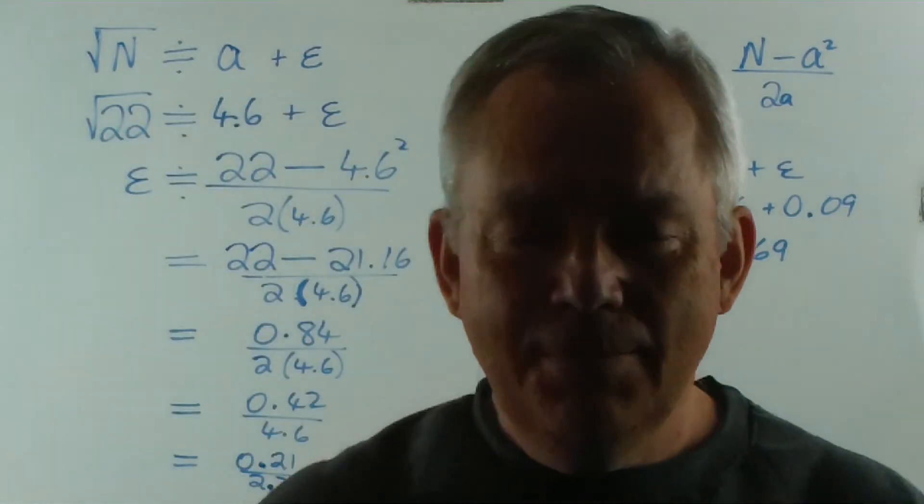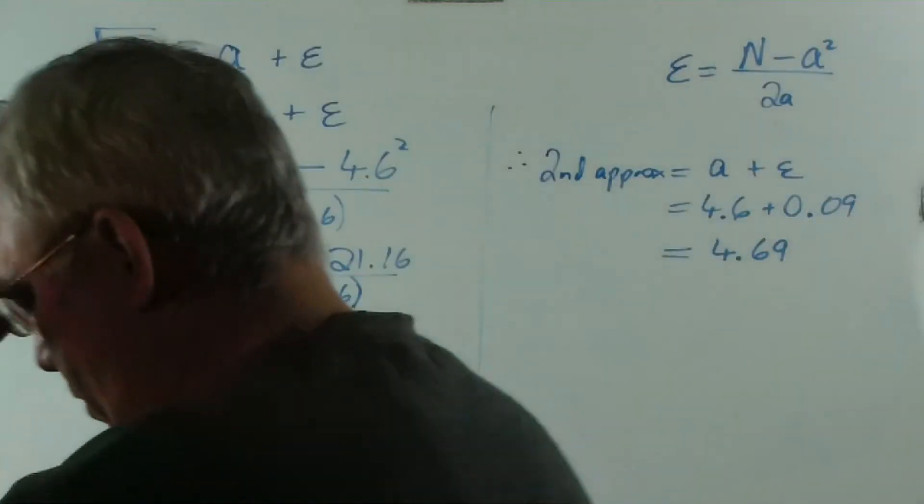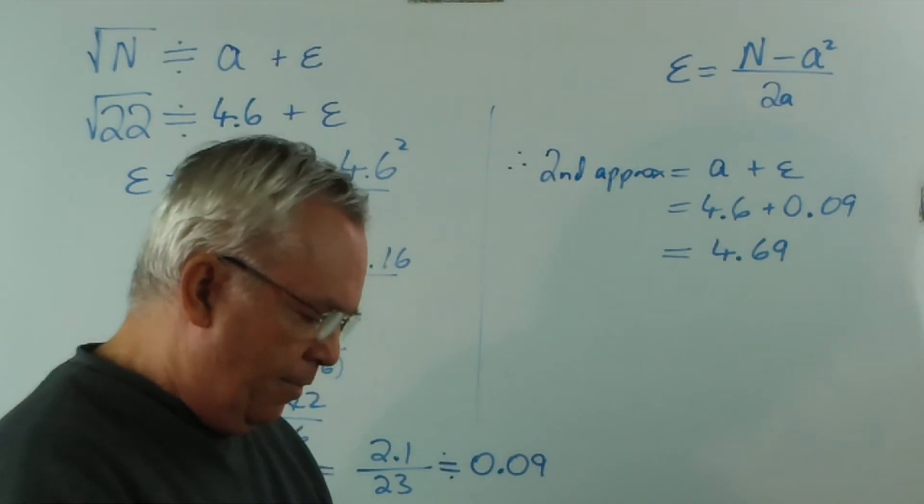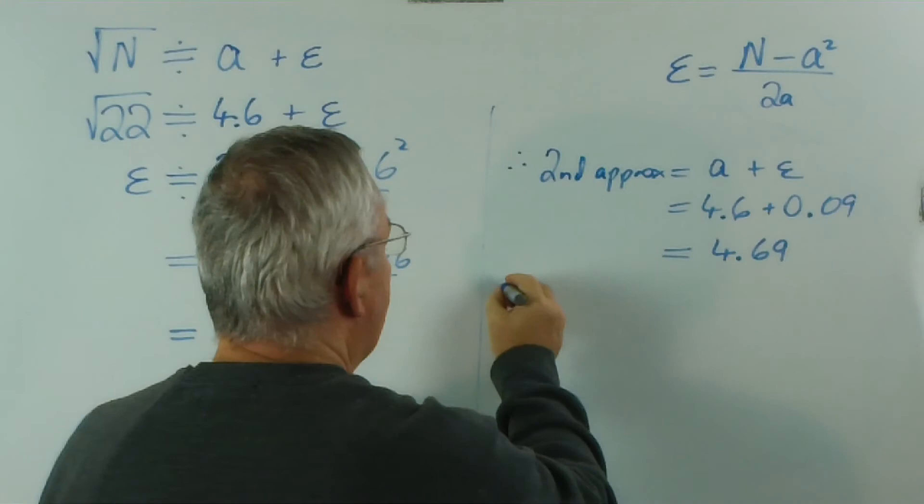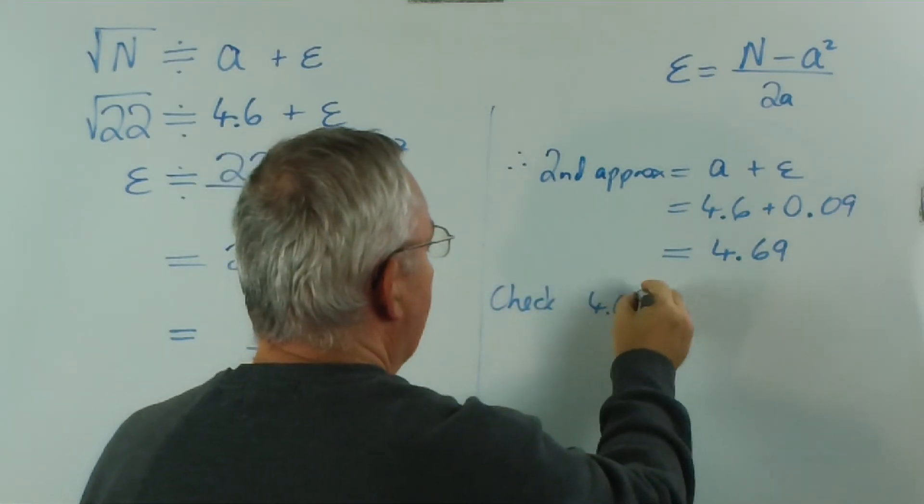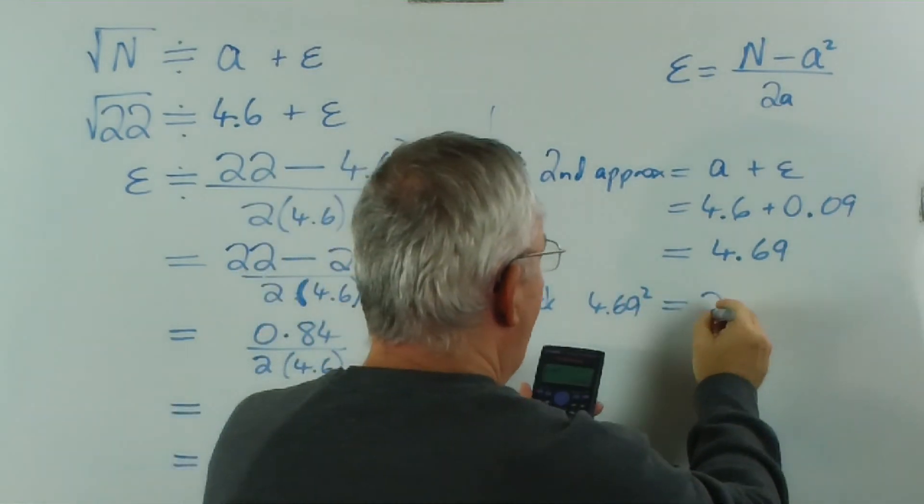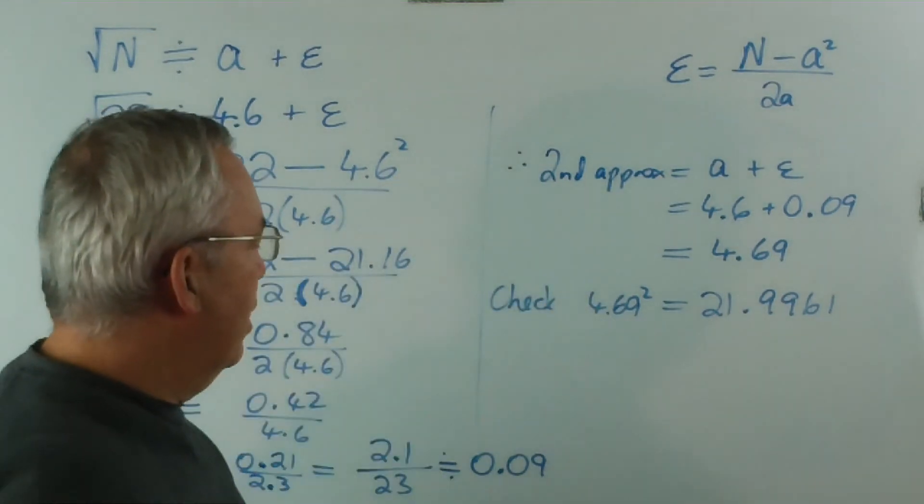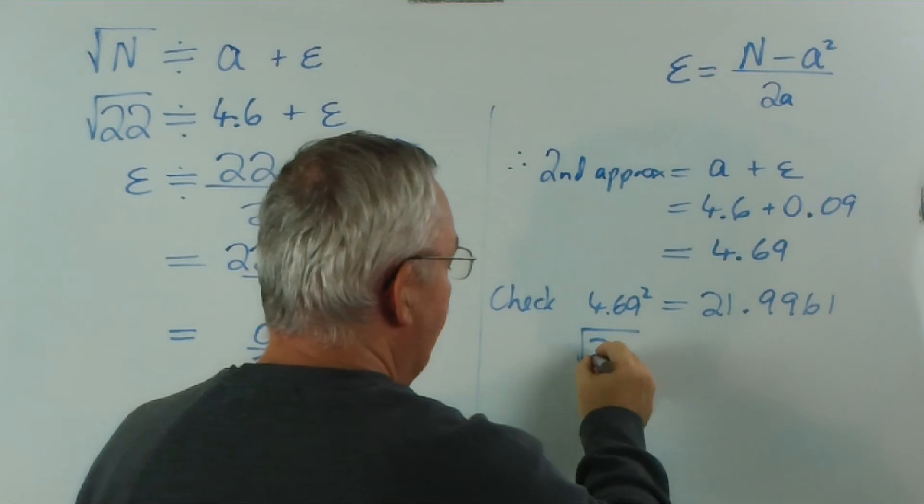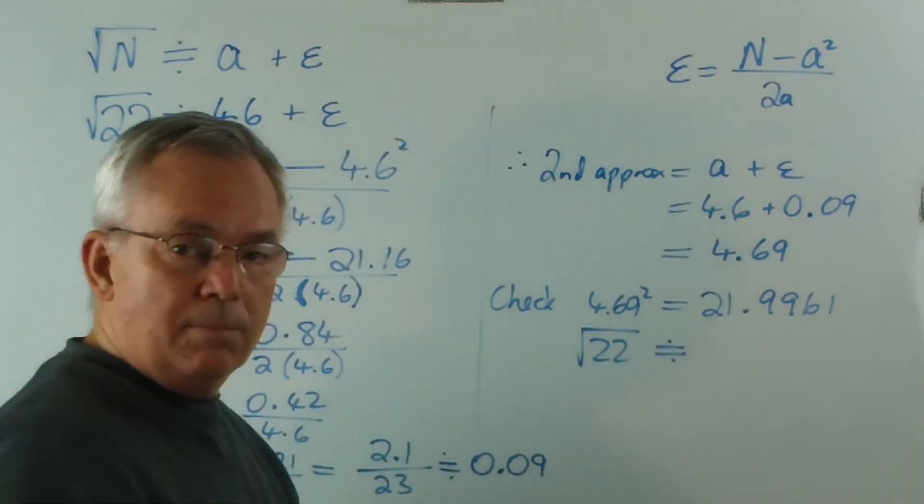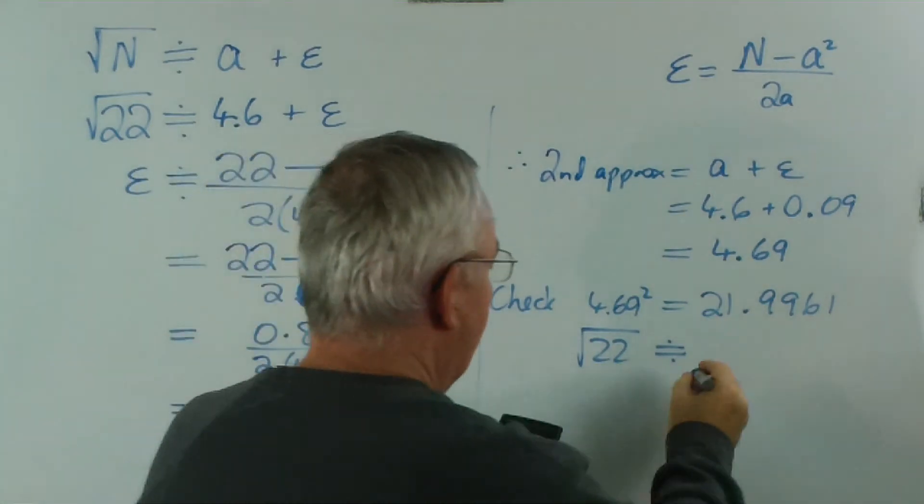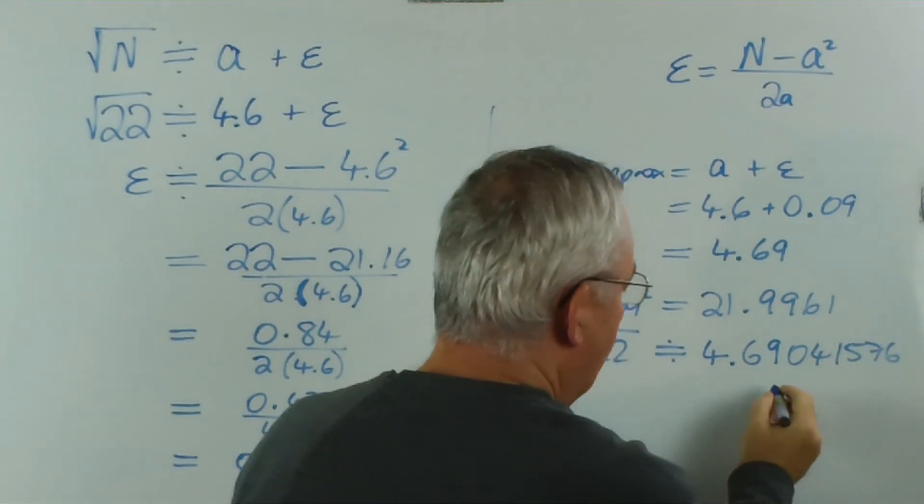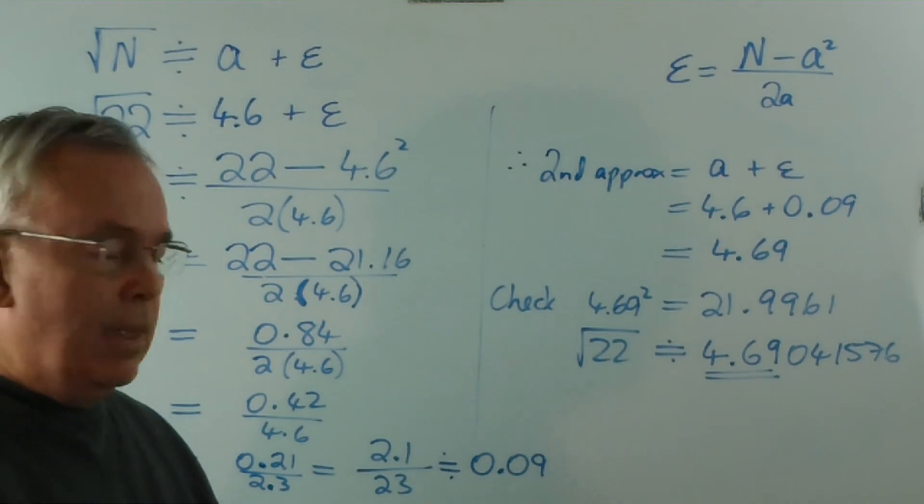Bear with me, I'll get my glasses and the calculator. Here we go. And I'm going to work out 4.69 squared. 4.69 squared. Oh, wow! That's quite good. Here's our check: 4.69 squared is 21.9961. So it's actually very, very close to 22, as we were hoping. Another way of checking this out would be to say, what is the square root of 22 really, according to the calculator? And it really is 4.69041576. So you can see that we've already got the first three digits quite well established.